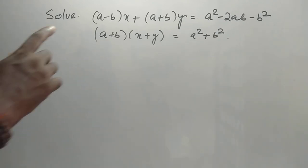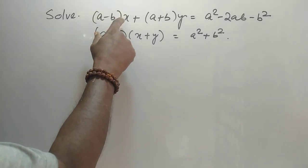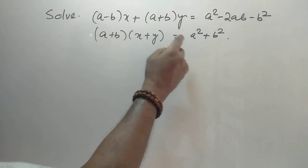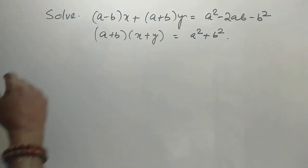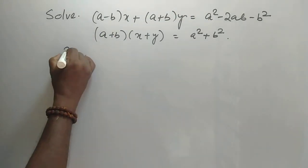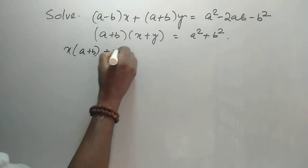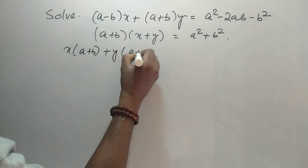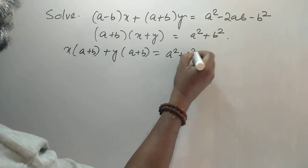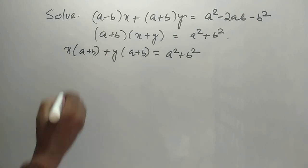There are two simultaneous equations. The first equation has separate x and y coefficients. From the second equation, rewriting: x into (a plus b) plus y into (a plus b) is equal to a squared plus b squared.